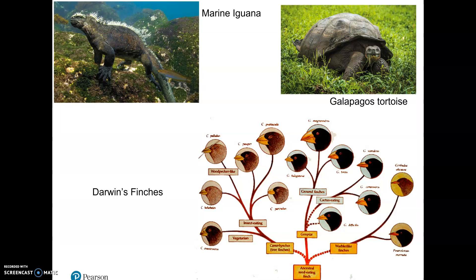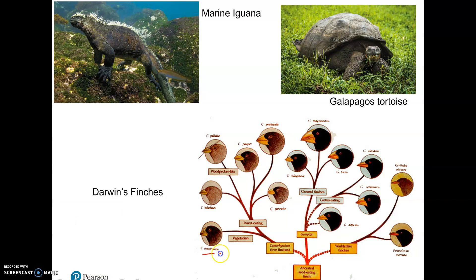Now let me show you one more slide. These are Darwin's finches. He basically found fossils of an ancestral finch that existed, and these are the living finches — something like 13 species of finches. Depending on where they lived — vegetarian, insect-eating, woodpecker-like, ground finches, cactus finches, warbler-like — their characteristics differed.